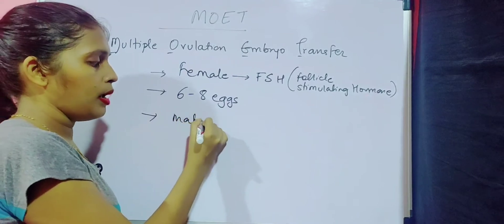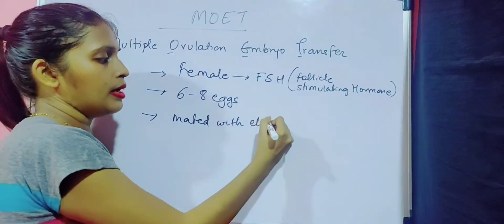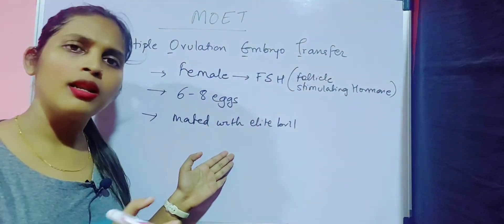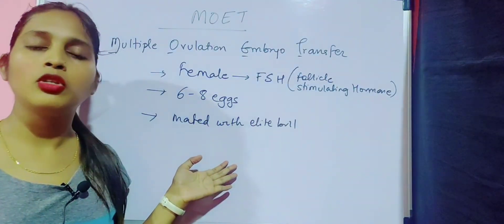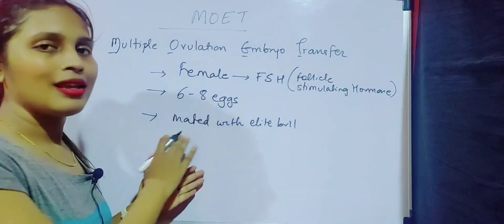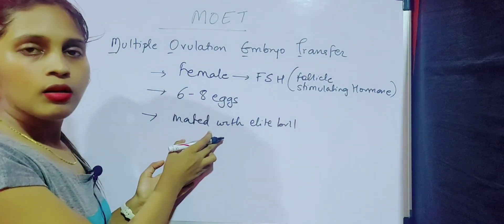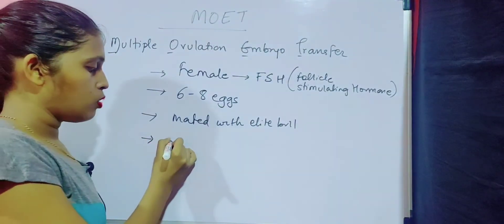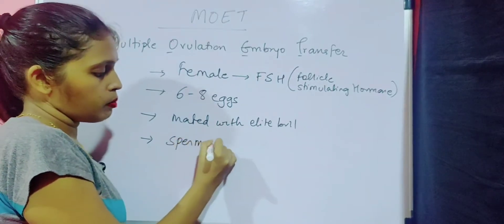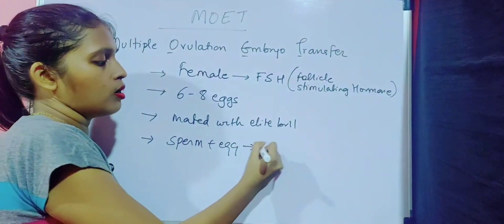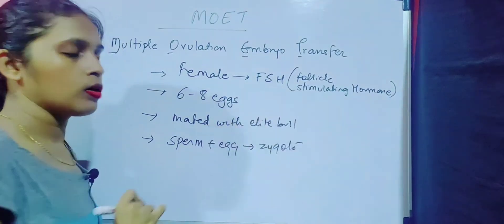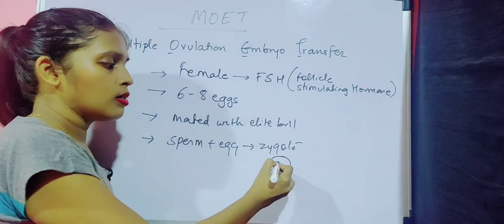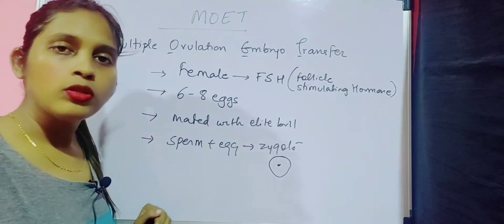After producing six to eight eggs, this female is mated with an elite bull either in a natural process or through artificial insemination. Once the mating is done, zygote production takes place — there will be fusion of sperm plus egg to form the zygote.